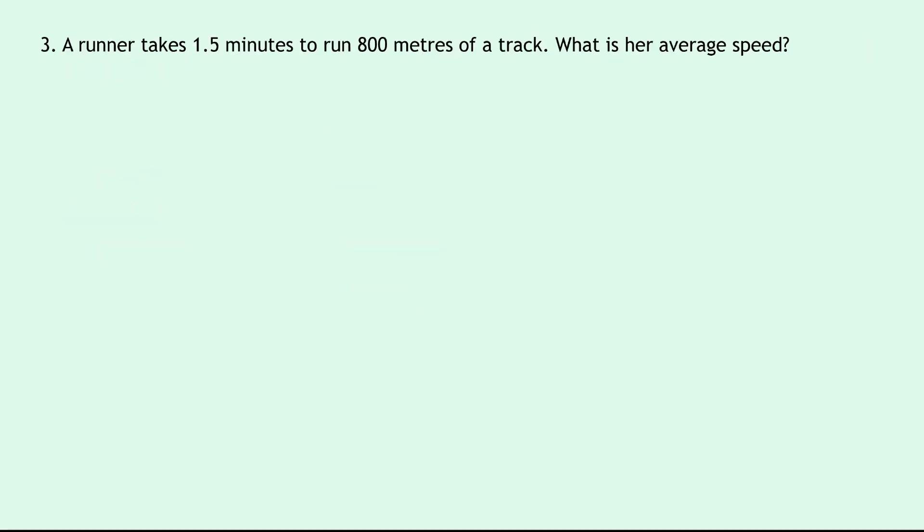Question 3 says a runner takes 1.5 minutes to run 800 meters of a track, what is her average speed? Again alarm bells should be ringing that we've not been given a time in seconds, we've been given a time in minutes instead. So what we need to do is convert from minutes into seconds. The question's asking for average speed so we've got v equals question mark, d equals 800 meters and time equals 1.5 minutes. Now remember we need to change that from minutes into seconds so we need to times by 60 to find out how many seconds are in those minutes. So we've got 1.5 times 60 gives us 90 seconds. Same as before, write down our equation as the first step, then we need to rearrange for the speed this time so we get v equals d over t, and then we can substitute in the numbers so we've got 800 divided by 90 which will give us 8.9 meters per second.